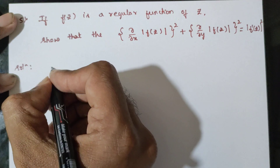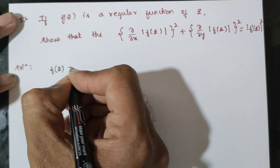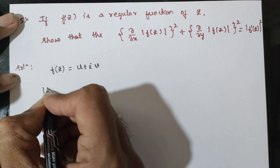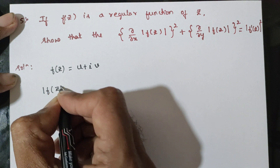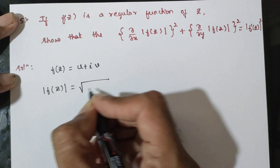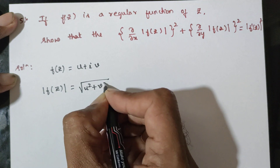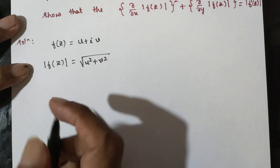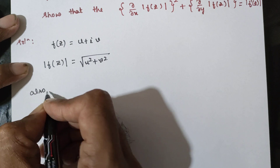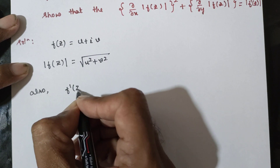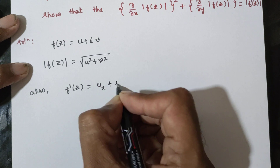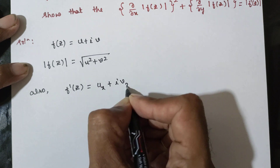First, we have f of z is equal to u plus i times v. Therefore, the magnitude of f of z is u plus i times v. Also, we have f dash of z is equal to ux plus i times vx.